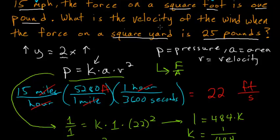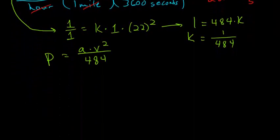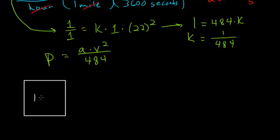So what is the velocity of the wind when the force on a square yard is 25 pounds? And again here, we're dealing with feet. So we need to convert 1 square yard to square feet. And one way to do that is to draw a square where the area of this is 1 square yard. And that makes each side of this 1 yard. And 1 yard we know is equal to 3 feet. So each side of this is 3 feet. And finding the area of this in square feet, we just multiply 3 times 3 is 9. So 1 square yard is equal to 9 square feet.